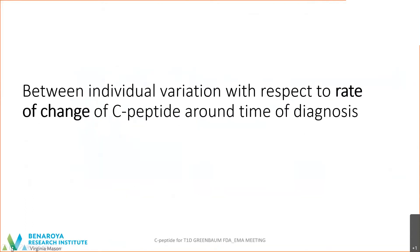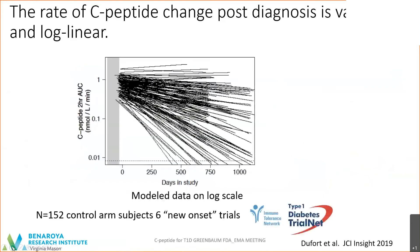What about the rate of change? The rate of change around the time of diagnosis is dramatically heterogeneous. The rate of C-peptide can be looked at in a log-linear change. This is data from about 150 individuals in the control arms of multiple different trials, and you can see there's a wide variation in the rate of change over time, illustrated by two examples — somebody whose C-peptide was pretty stable versus somebody who had quite a dramatic fall.